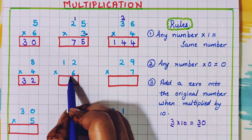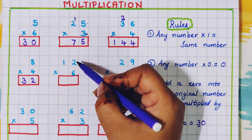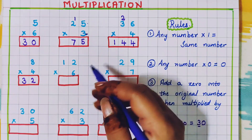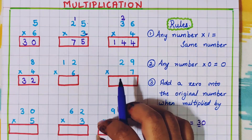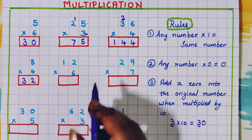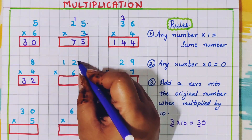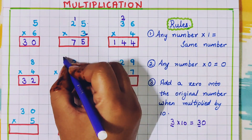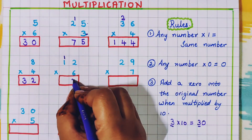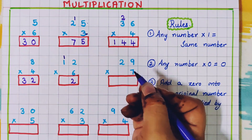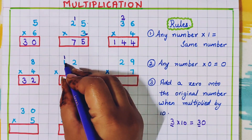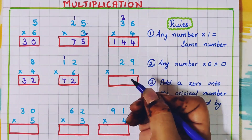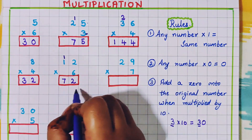Let's see a few more examples: 12 into 6. Whoever knows the table of 12 can directly solve it — 12 6s are — but if you don't know the table, let's try. First, 6 2s are 12; I will write the carry over and write 2 in the 1s place. Next, 6 1s are 6; 6 plus 1 carry is 7. So 12 6s are 72.